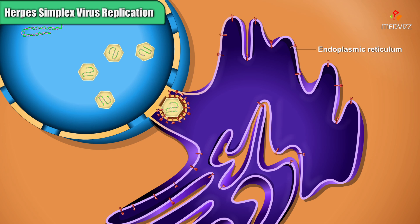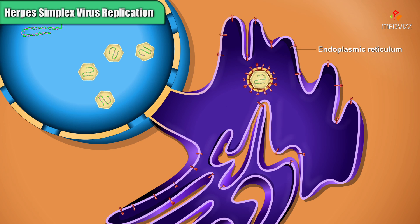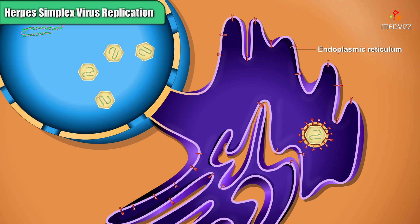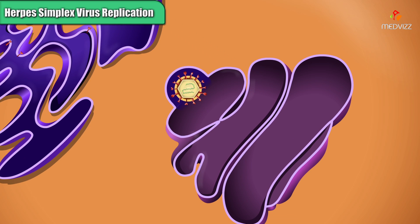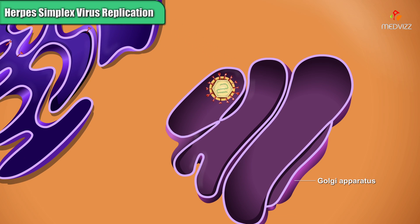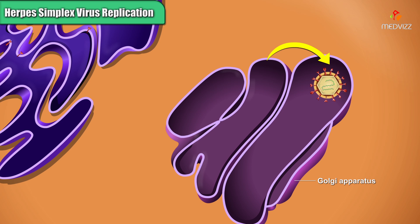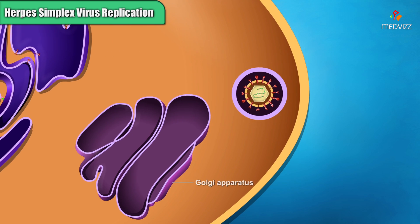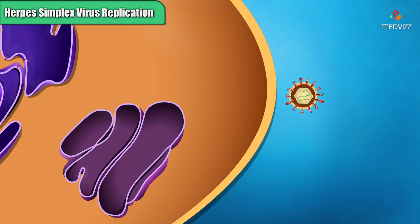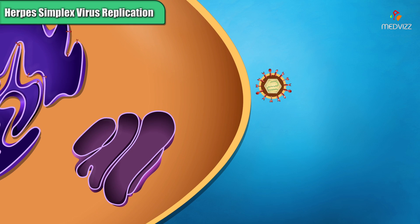A capsid buds through the inner nuclear membrane, becoming enveloped by a single membrane. The developing virion moves through the endoplasmic reticulum and buds off, after which it fuses with the Golgi apparatus. The virion eventually buds off the Golgi apparatus and fuses with the plasma membrane. The completed virion is now outside the cell.